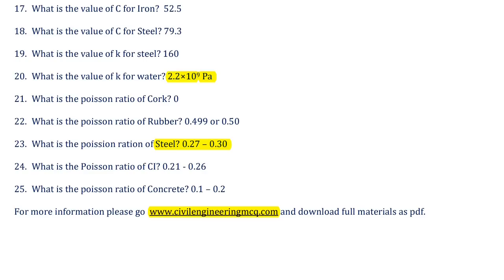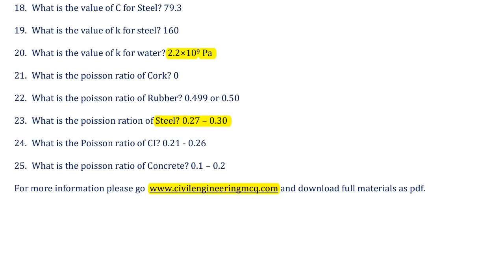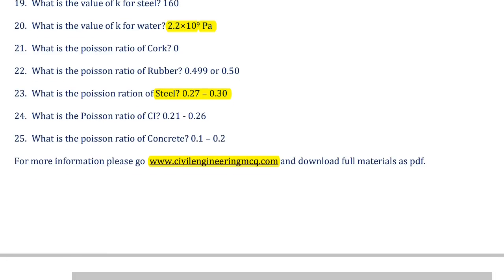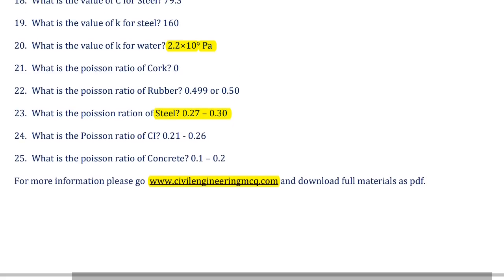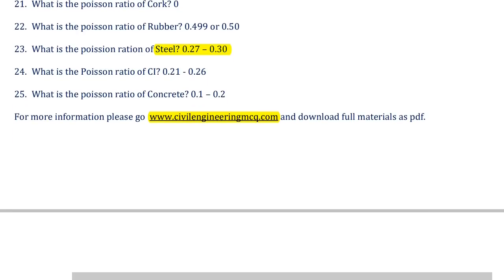Twentieth question: Bulk modulus for Water is 2.2 × 10⁹ Pa, which is 2.2 GPa or 2.2 kN/mm². Twenty-first: Poisson's ratio of Cork is zero — Cork is an impermeable buoyant material. Twenty-second: Poisson's ratio for Rubber is 0.499 to 0.5. Twenty-third: Poisson's ratio of Steel is 0.27 to 0.3. Twenty-fourth: Poisson's ratio of Cast iron is 0.21 to 0.26, and Concrete is 0.12 to 0.2.